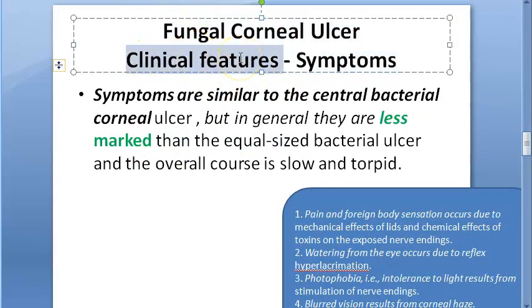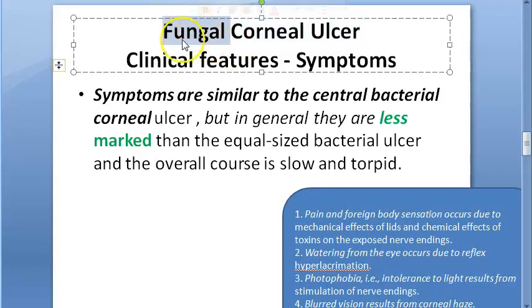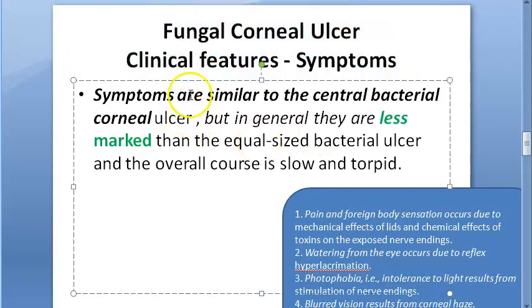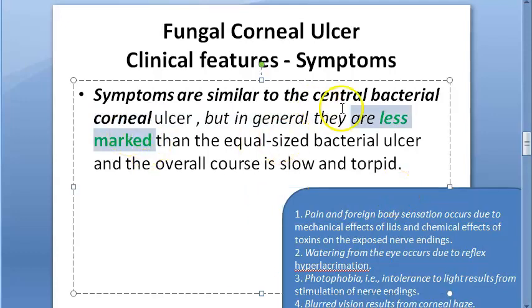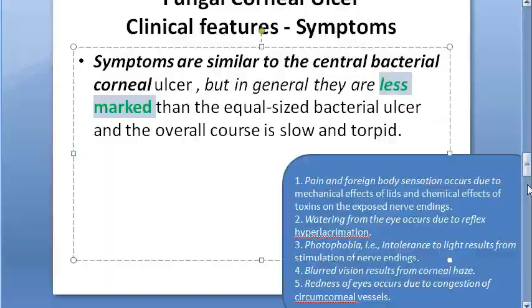Clinical features: in fungal corneal ulcer, the symptoms are similar to other corneal ulcers but less marked. There is very little pain, watering, photophobia, blurred vision, redness, and foreign body sensation. Everything is less because the fungus grows slowly, and patients may come late with complaints only after a long time.